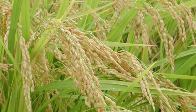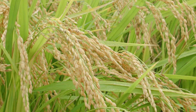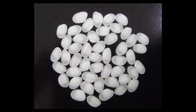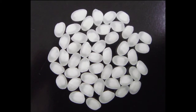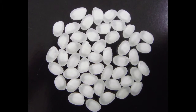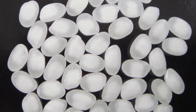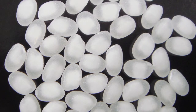Shuzo kotekimai has an internal core called the shinpaku, which does not exist in ordinary table rice. The shinpaku is the opaque white core of the rice grain. The starchy organization in the shinpaku is coarse, so it can absorb the koji mold easily. Grains with a shinpaku are ideal for sake brewing because they make koji production easier.